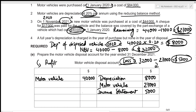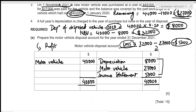To verify, both sides of the disposal account should be equal. Debit side total = $40,000. Credit side total = 8,000 + 27,000 + 5,000 = $40,000. Both sides match, confirming our calculations are correct. This concludes the fifth part and the entire question. If you found this video useful, please like, comment, subscribe, and hit the bell icon so you don't miss future videos. Thank you!